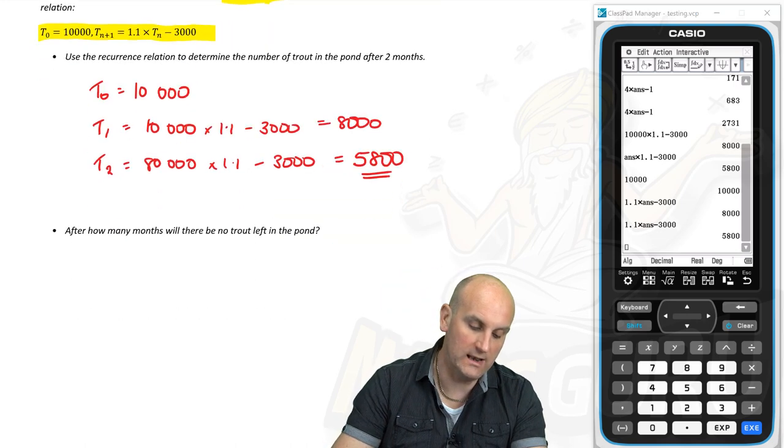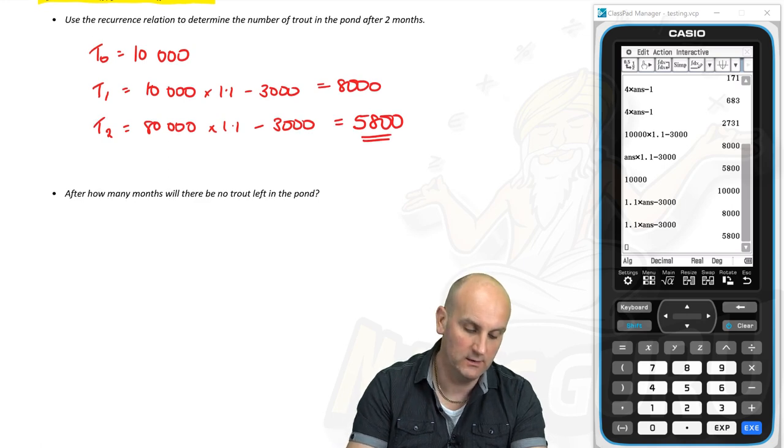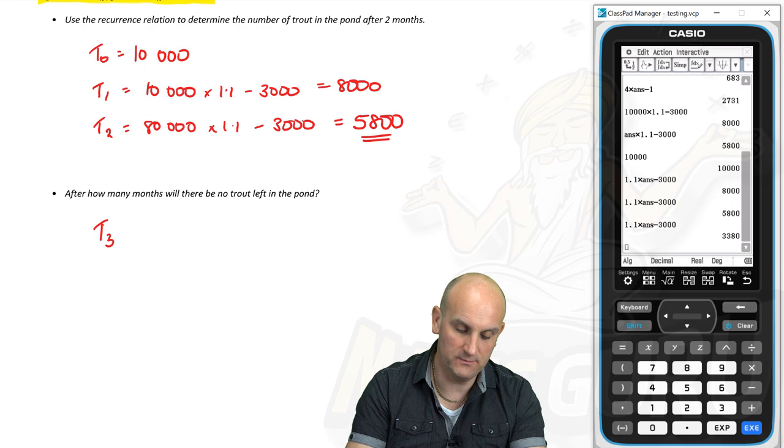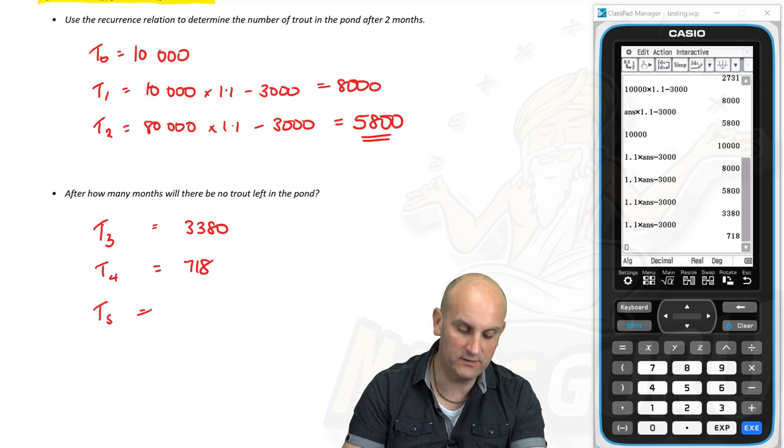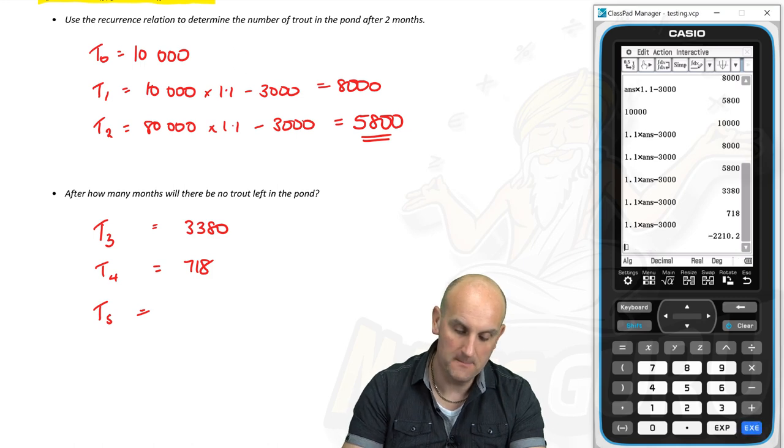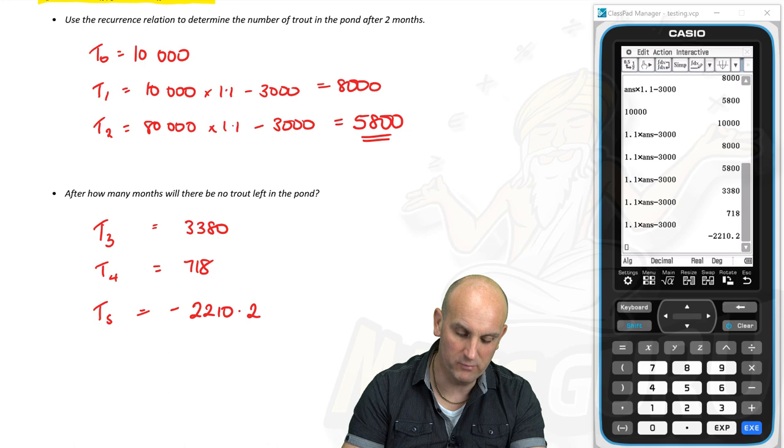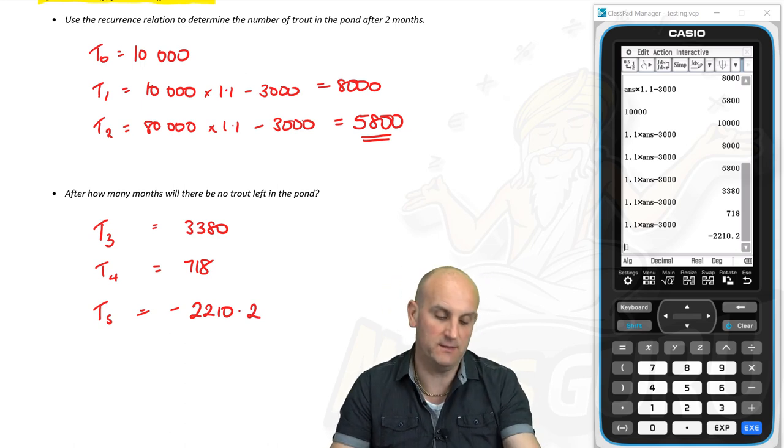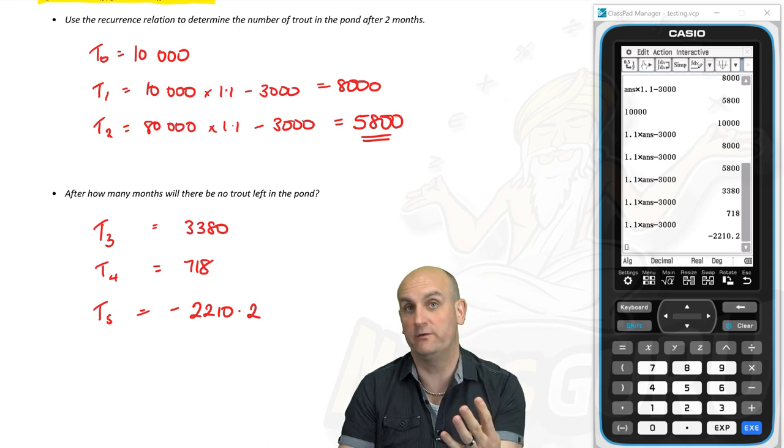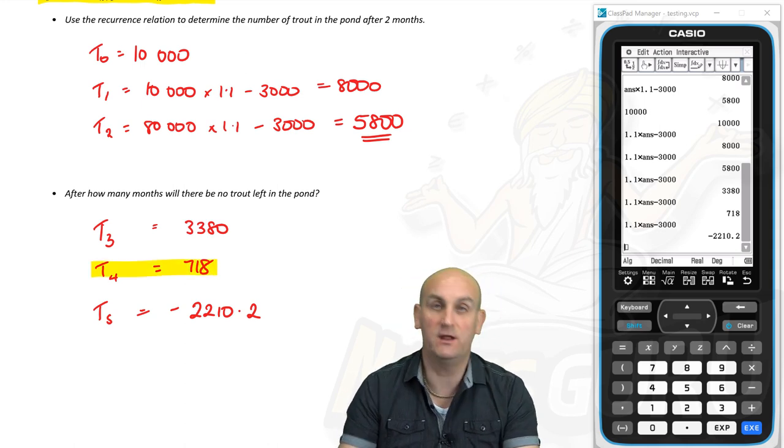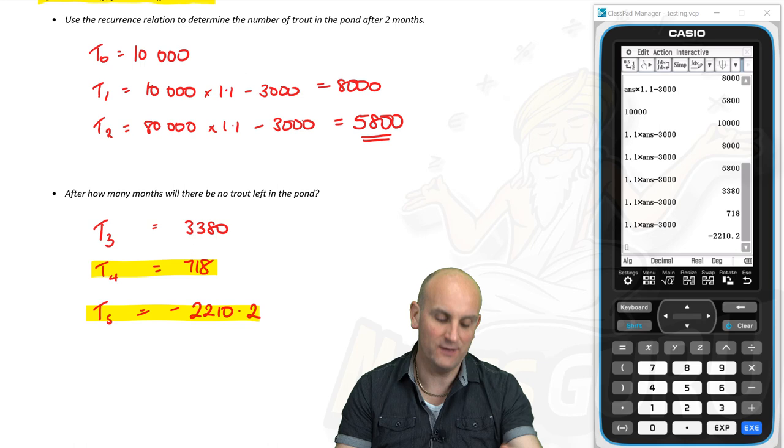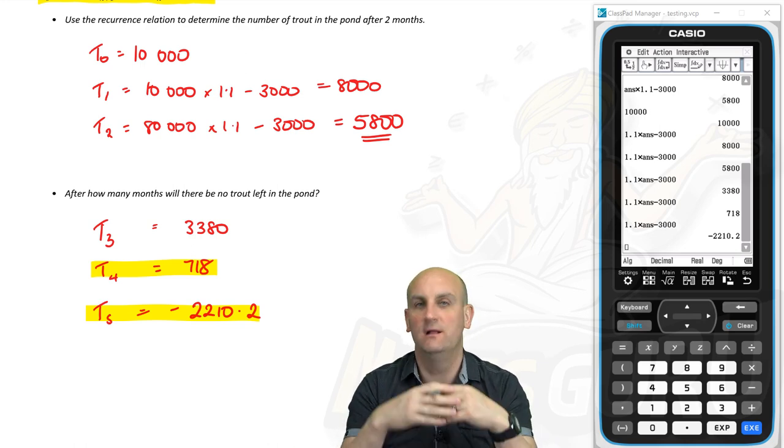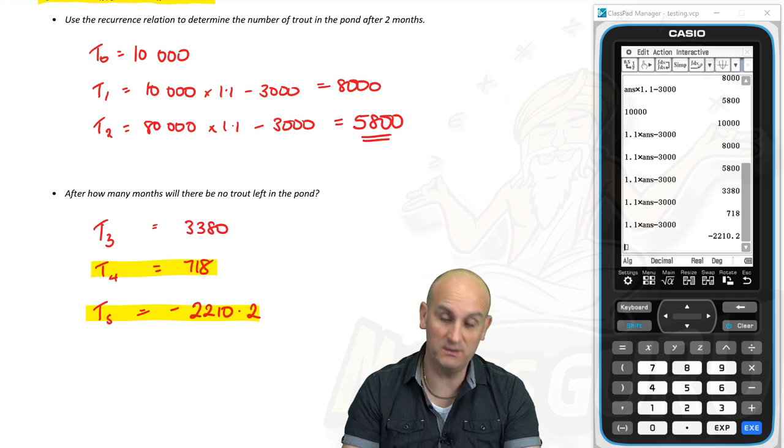After how many months will there be no trout left in the pond? So T_3, at the end of the third month, there is going to be 3,380. At the end of the fourth month, there's going to be 718. And at the end of the fifth month, there is going to be -2,210.2. So it says after how many months will there be no trout left in the pond? Well, we can't say four months because at four months there was still 718 left. So at the end of the fifth month, there is effectively going to be none left. I know it says -2,210, your calculator is doing all these random things, but this is where you have to interpret the answer.